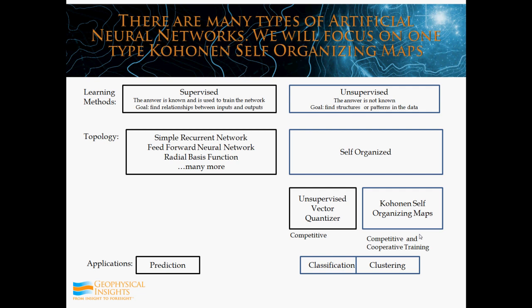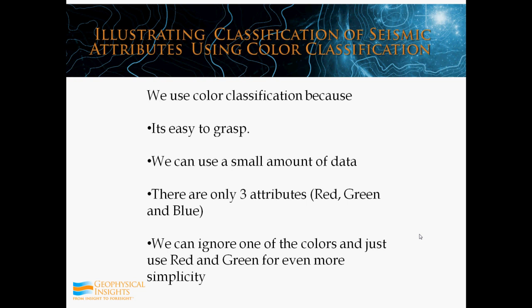I'm going to use color classification to help visualize seismic data. First, I'm going to normalize that seismic data into the RGB — red, green, blue — color range. I'm doing this because color classification is easier to grasp. We can use a small amount of data; there are only three attributes: red, green, and blue. And we can ignore one of the colors and just use red and green for even more simplicity.